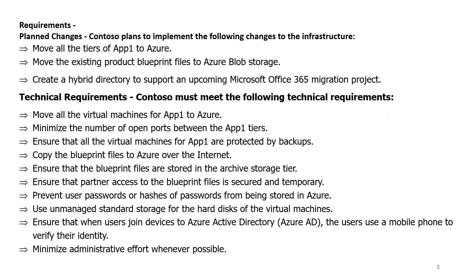Requirements — Planned Changes. Contoso plans to implement the following changes to the infrastructure: move all tiers of Application F1 to Azure, move the existing product blueprint files to Azure Blob storage, and create a hybrid directory to support an upcoming Microsoft Office 365 migration project.